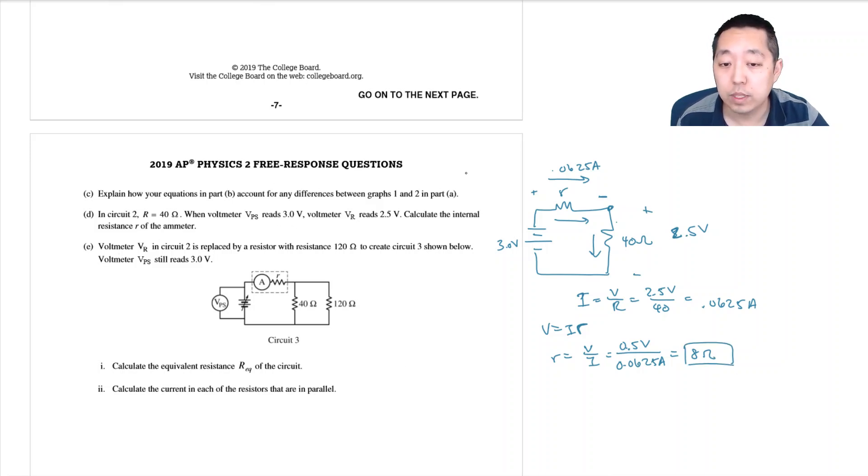Okay that was part d. Part e, voltmeter VR in circuit 2 is replaced by a resistor with 120 ohms to create circuit 3. So we put a resistor here to create a circuit 3. Voltmeter VPS still reads 3 volts across here. Calculate the equivalent resistance of the circuit. First of all, this is 8 ohms because we've already calculated this is 8 ohms.